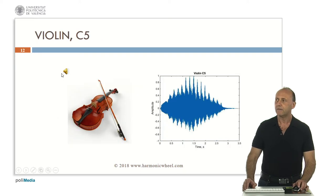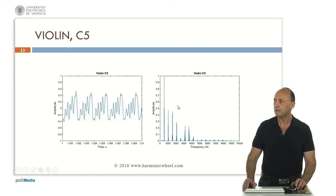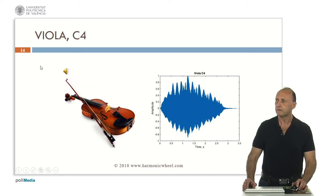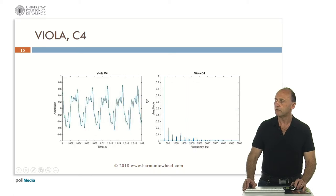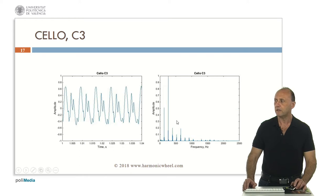The violin, C5. Now we can appreciate the typical vibrato. This is the envelope, the waveform, and the spectrum. Viola, C4. Also with the typical vibrato. Envelope, waveform, and spectrum. Cello, C3. This is the envelope, the waveform, and the spectrum. Double bass, C2. This is the envelope, the waveform, and the spectrum.